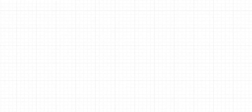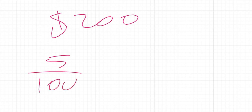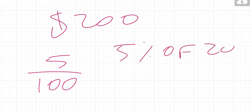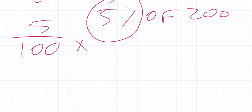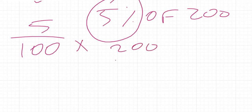Let's look at some examples. If I have two hundred dollars and I want to use five percent of it, how much money would I actually use? We can rewrite five percent of two hundred: 'of' refers to multiplication, so we write five over a hundred, multiplied by two hundred, giving us two fractions to work with.